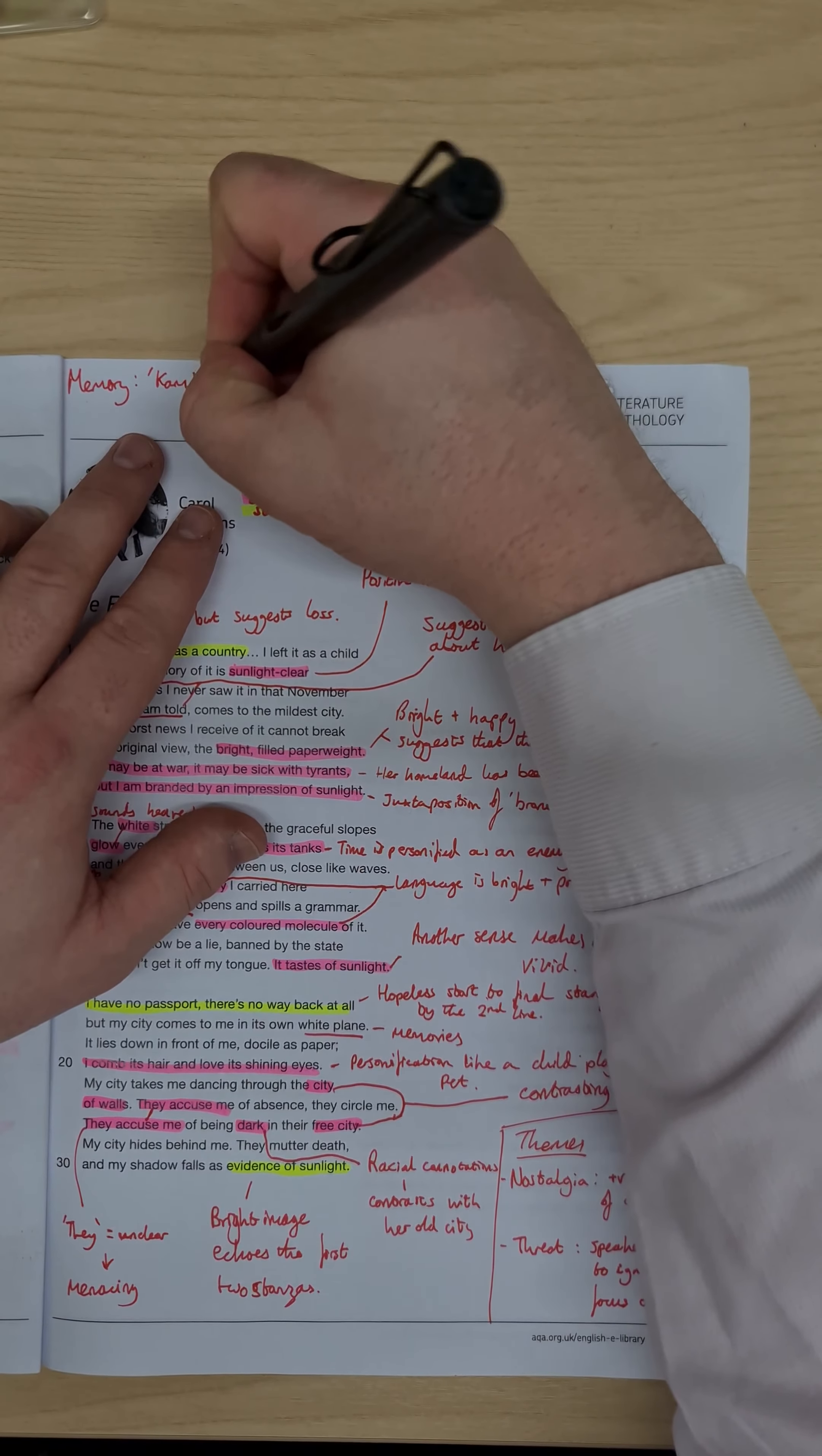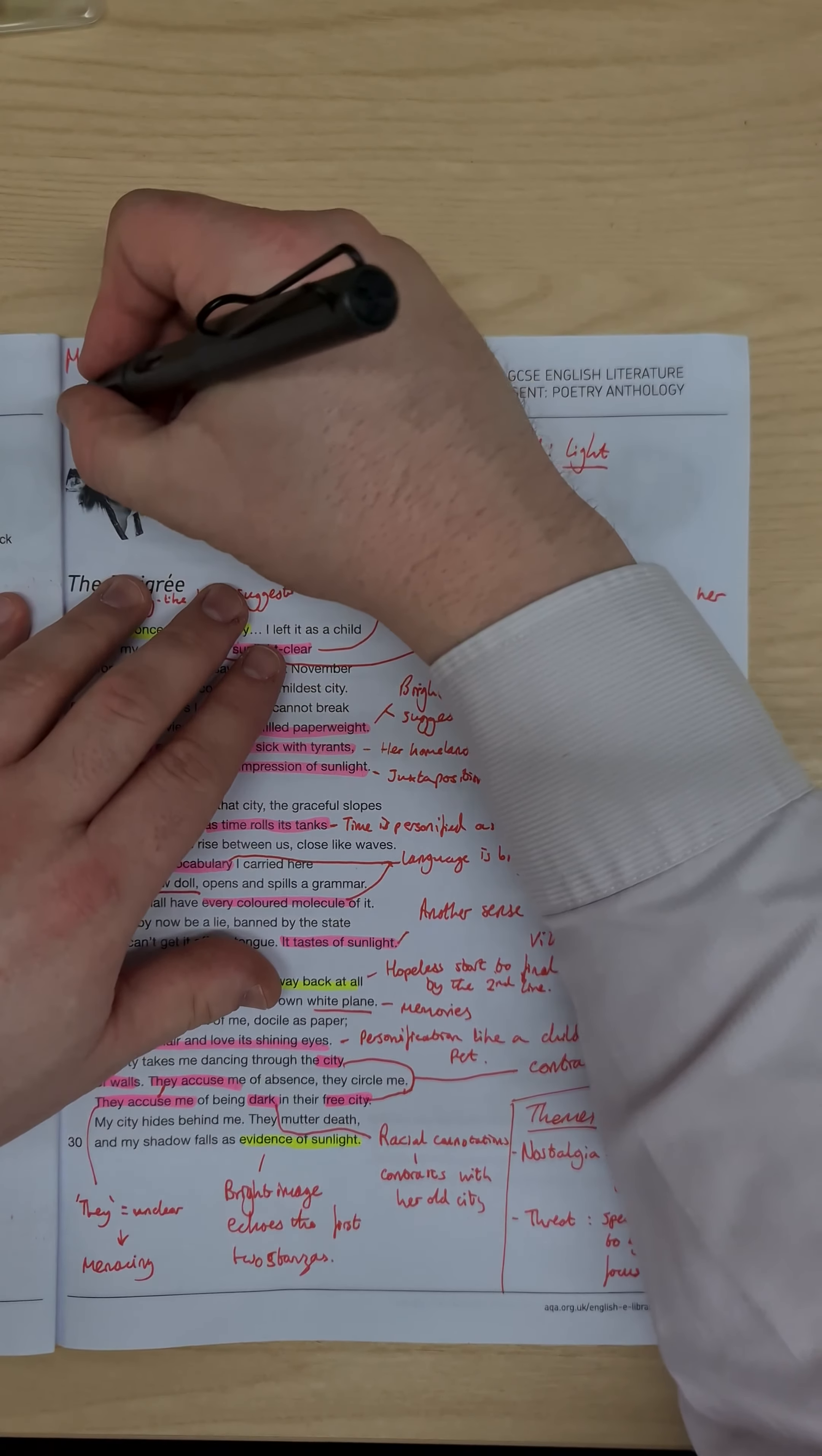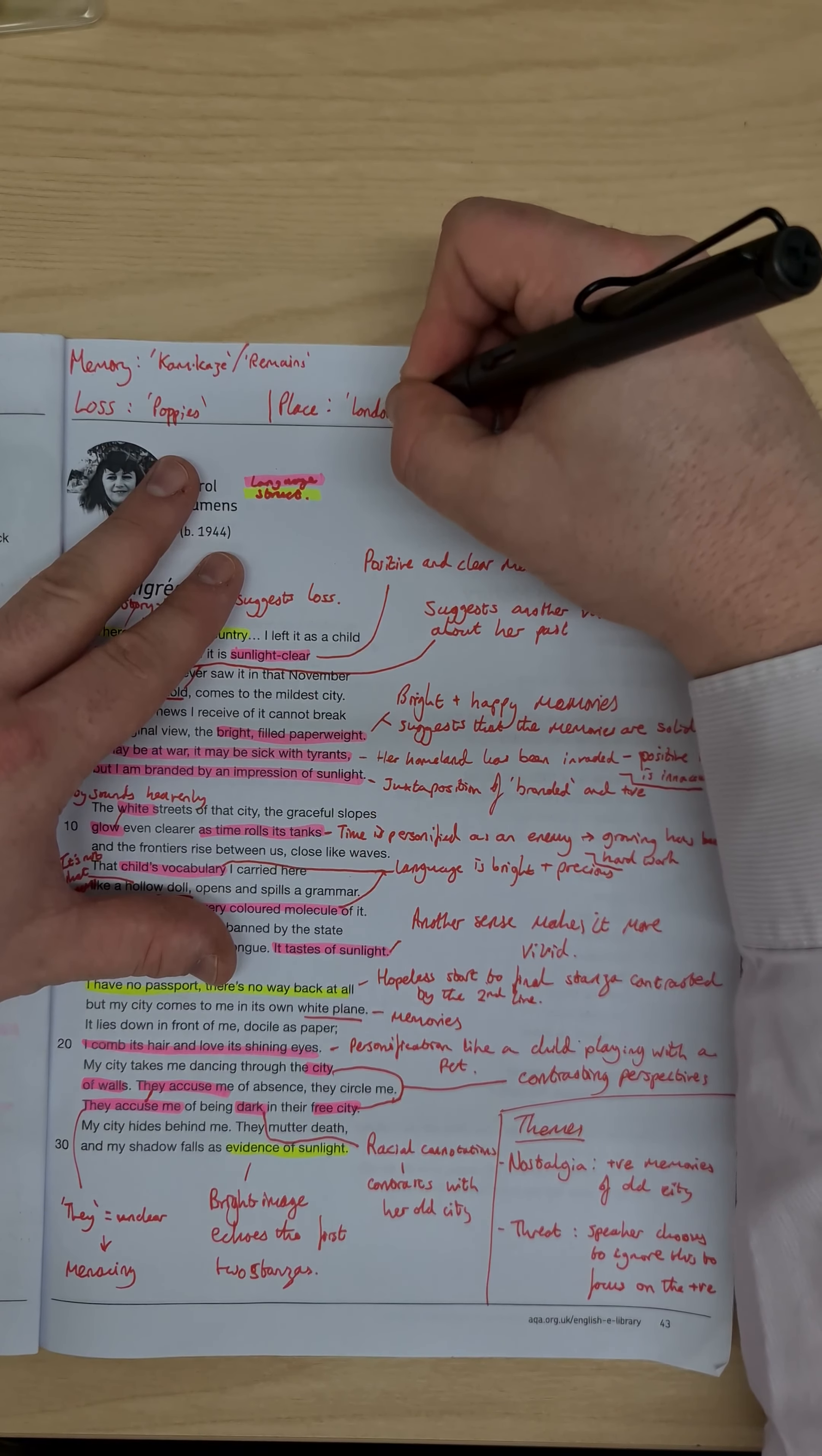you could also really interestingly contrast it with war photographer or remains, so I'll put remains on there because it's a really interesting contrast, how here we have someone clinging on to positive memories, and in remains we have someone whose memories are almost destroying them, you could also compare the experience of loss, with poppies, so in this one the speaker has lost her old city, in poppies she loses a son, you've also got the experience of place, so that how important a place is, that could link very nicely with the poem London.